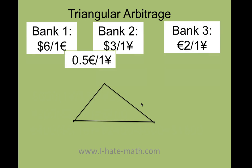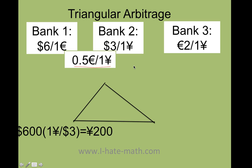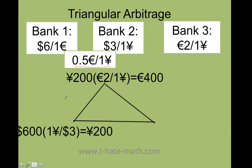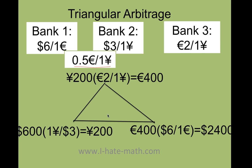Let's recap what we just did. I was reading the newspaper, I saw the two rates, and I did the cross rate to figure out if I could make a profit. I saw that one yen gives 0.5 euros domestically but one yen gives 2 euros abroad, so I could buy low and sell high. I started with $600, bought yen because it was the strongest, then converted to euros, and finally got my dollars back.